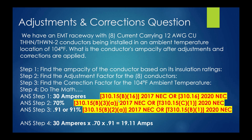A couple of keynotes on code references. For ampacities, it's table 310.15(B)(16) in the 2017 code; in the 2020 code it goes to 310.16. For adjustment factors — number of current-carrying conductors in excess of three — it's 310.15(B)(3)(a) in the 2017 code; in the 2020 code that changes to table 310.15(C)(1). For the correction factor for ambient temperature, it's 310.15(B)(2)(a) in the 2017 code; in 2020 it goes to table 310.15(B)(2).